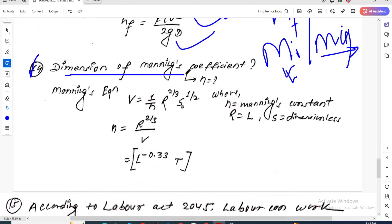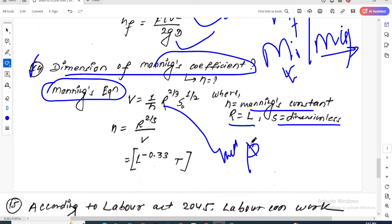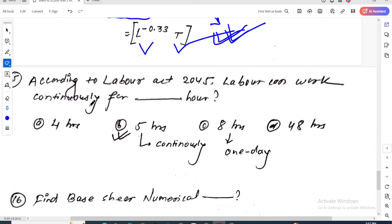Question fourteen is about dimension of Manning coefficient or Manning's constant N. First, Manning's equation is velocity equals 1 by N times R to the power 2/3 times S to the power 1/2. Here, S is dimensionless slope, R is hydraulic radius (wetted perimeter), and depth. Since S is dimensionless and R is length, the dimension of N equals L to the power minus 0.33 or T inverse. The final answer is option C.